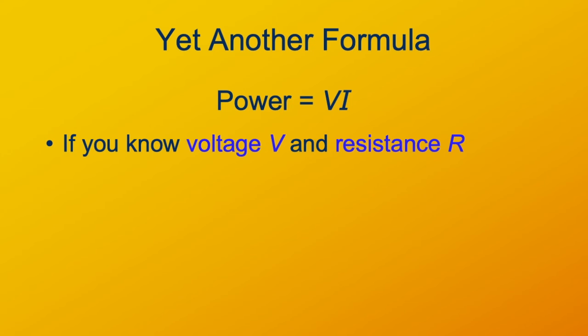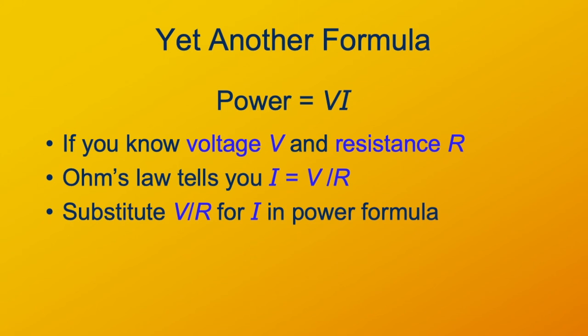Similarly, if you know the voltage and the resistance and don't really care about the current, you can solve Ohm's law for current, I equals V over R, and just substitute that in. So, it's going to be V times V over R, which is V squared over R.